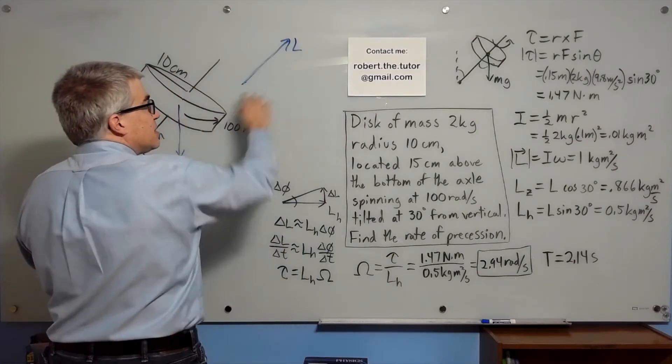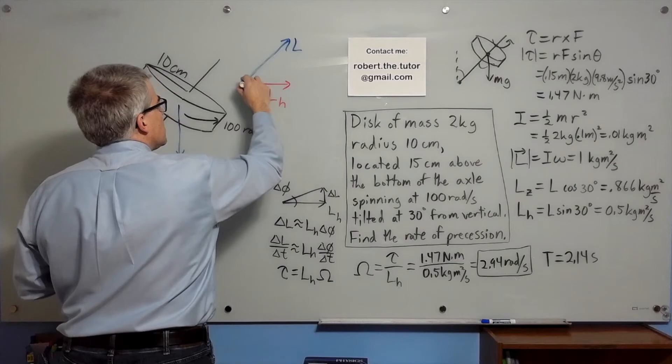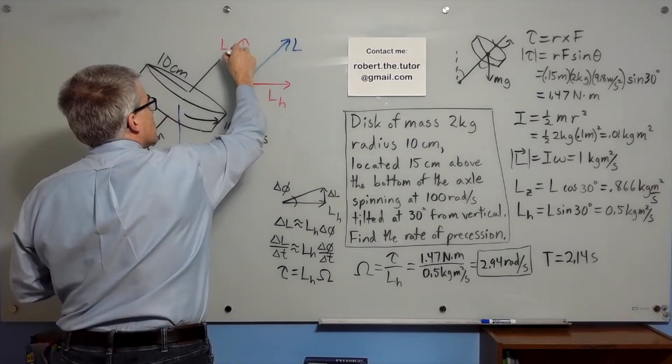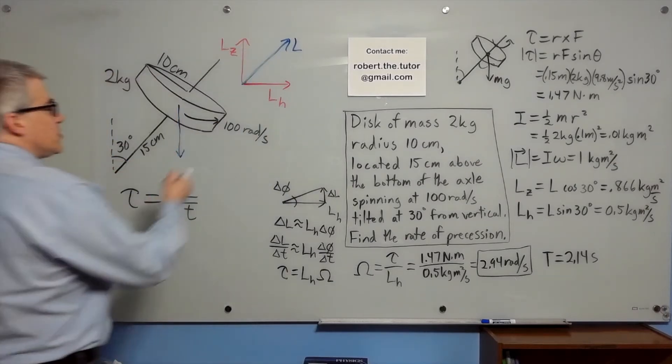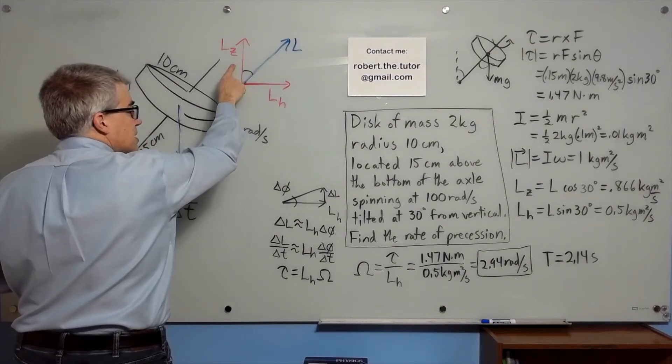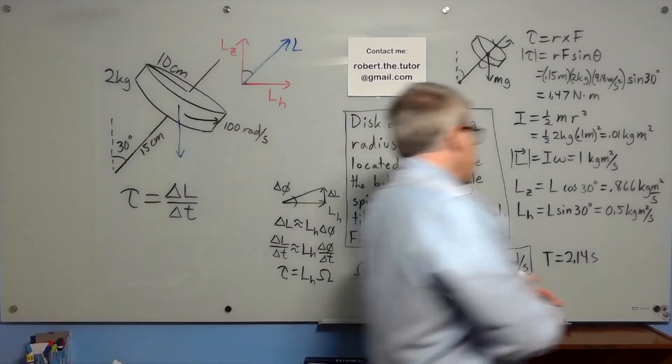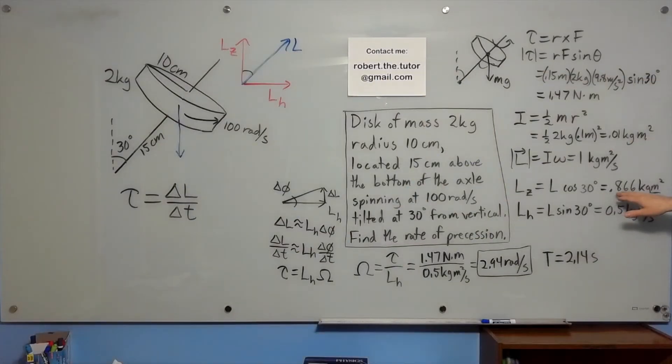I'm going to take that angular momentum vector and split it into a horizontal component and a vertical or z component. Since this angle is 30 degrees, so is this one. So the z part is cosine 30, and the horizontal part is sine 30. And so we end up with the angular momentum in the z direction is 0.86 kilograms meters squared per second. That's the part that doesn't change.